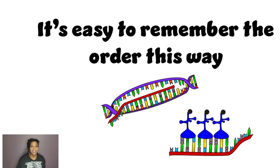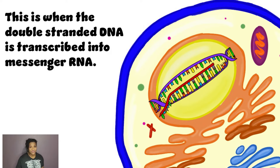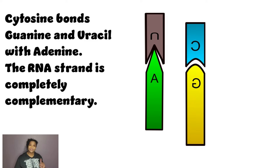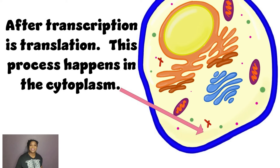The first step of protein synthesis is transcription, and transcription happens in the nucleus. This is when double-stranded DNA is transcribed into messenger RNA — cytosine matches guanine, and uracil pairs with adenine. The RNA strand is completely complementary.